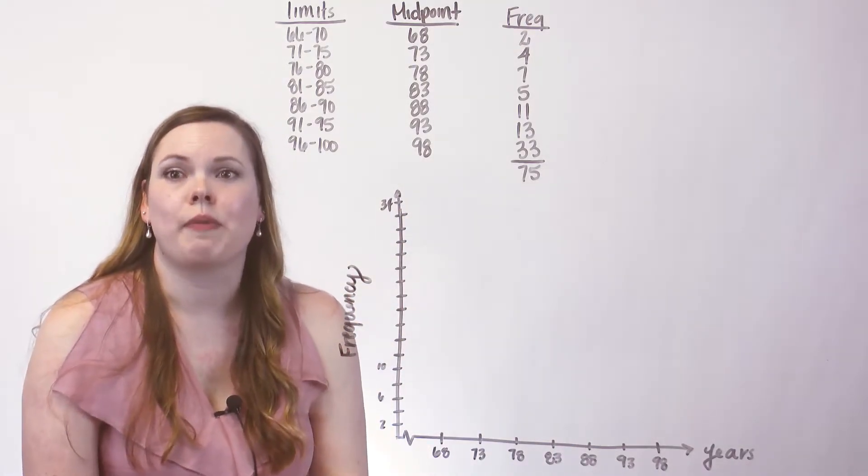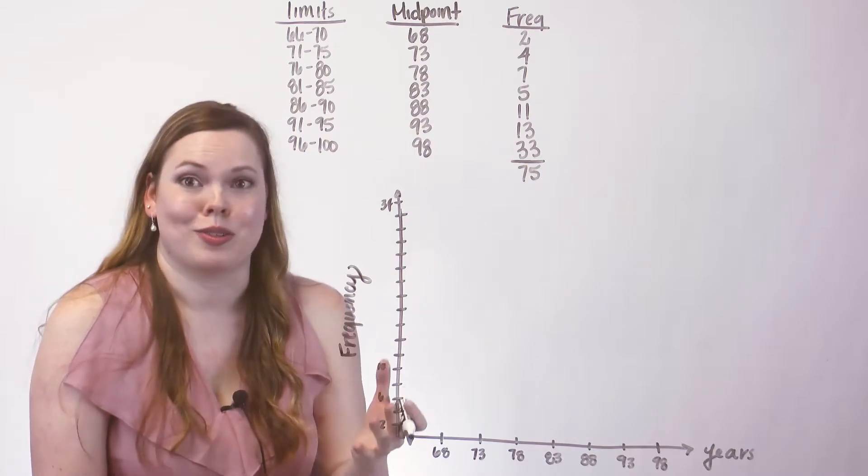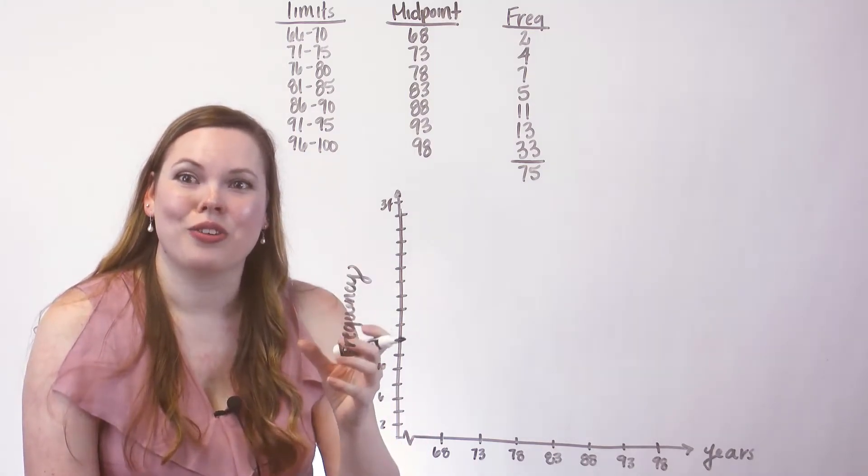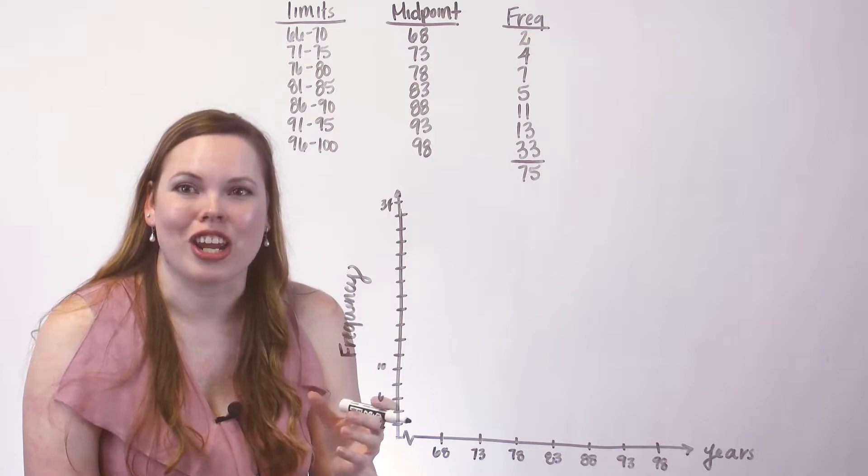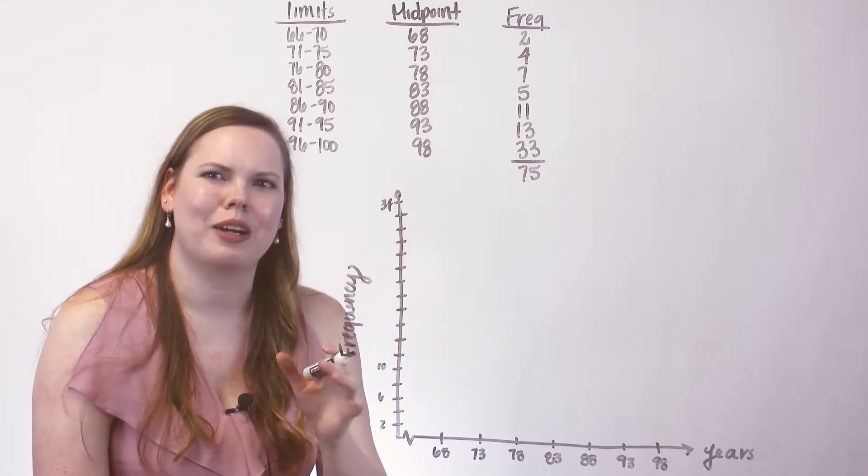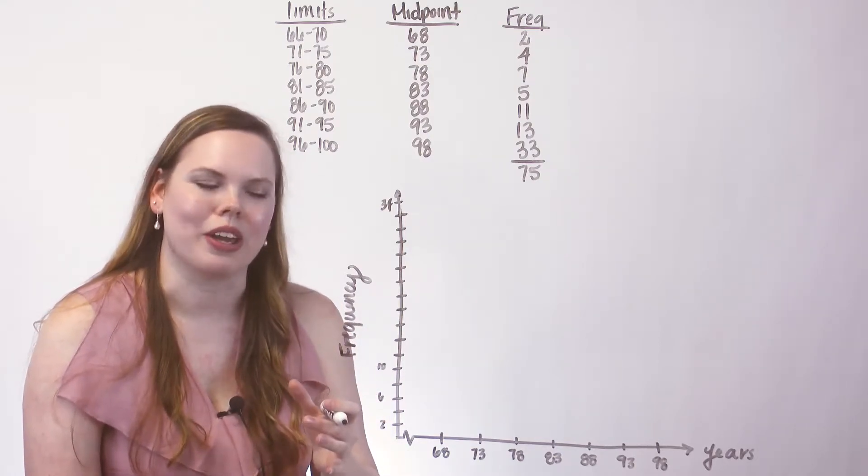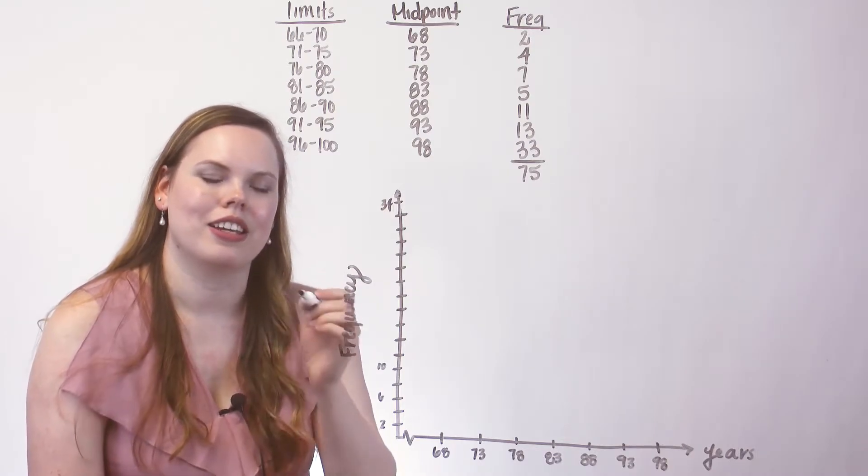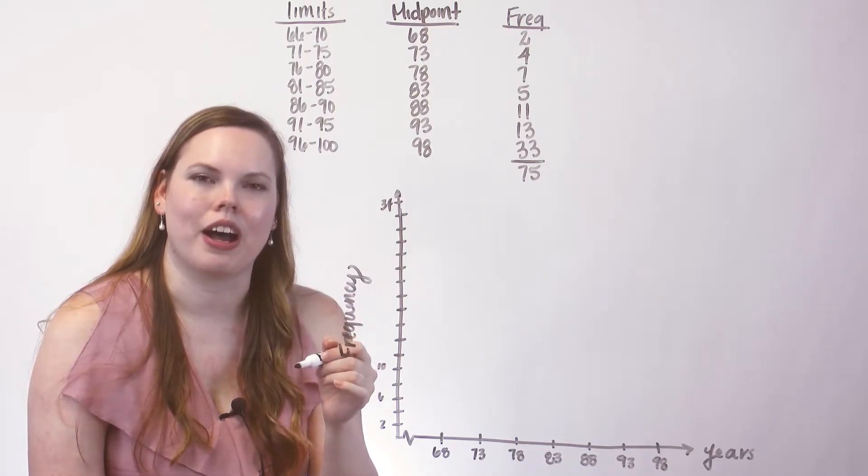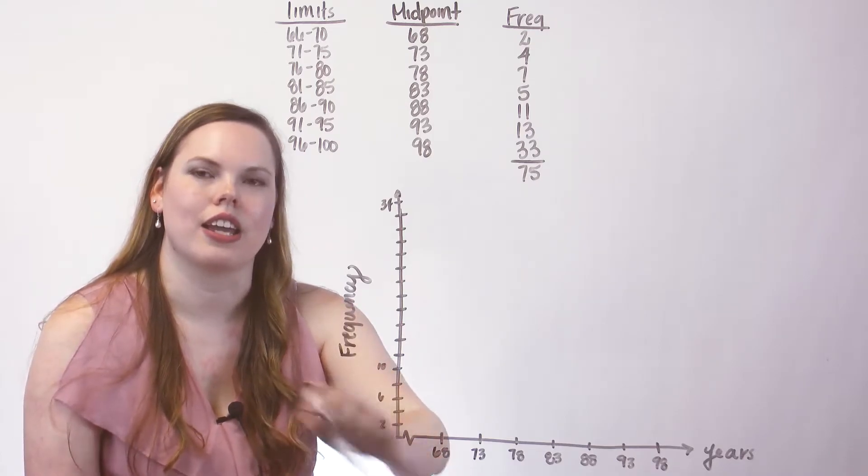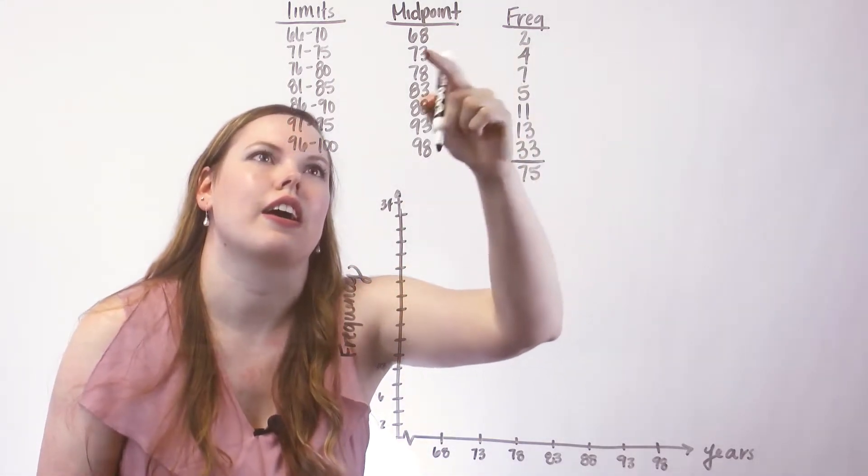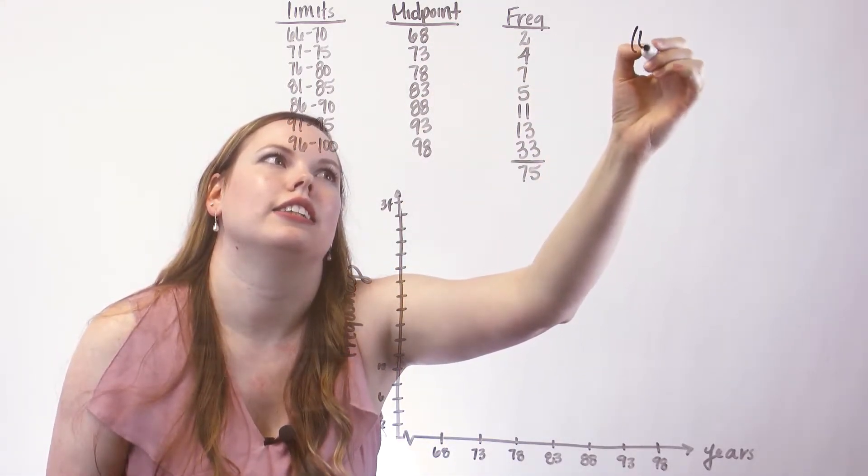A frequency polygon is a polygon. It's a closed line segmented shape. And so it's kind of like a scatter plot that you connect the dots with. And the points on that scatter plot are the midpoint and the frequency.